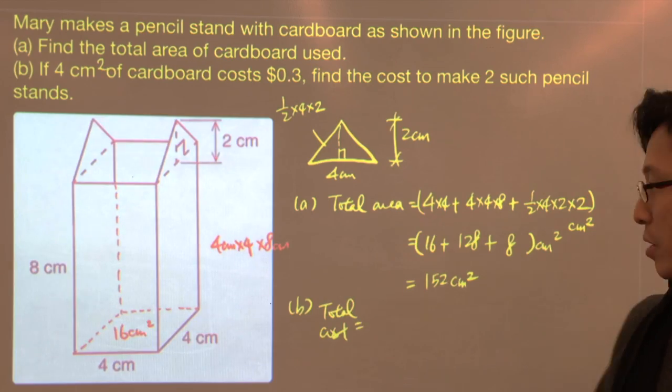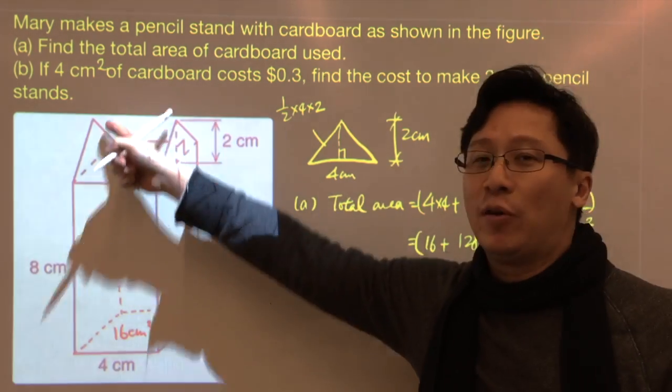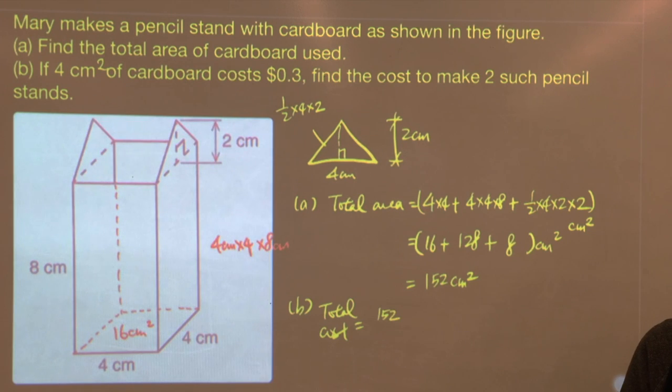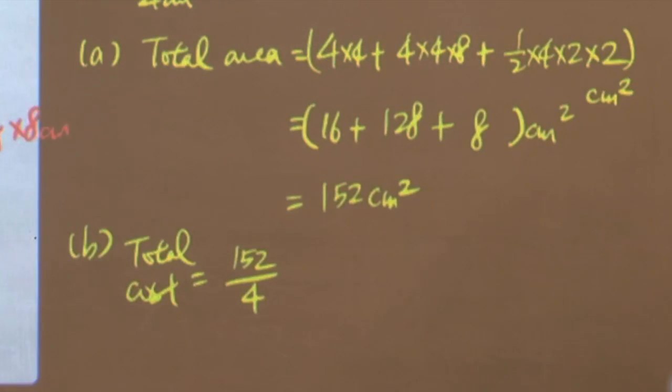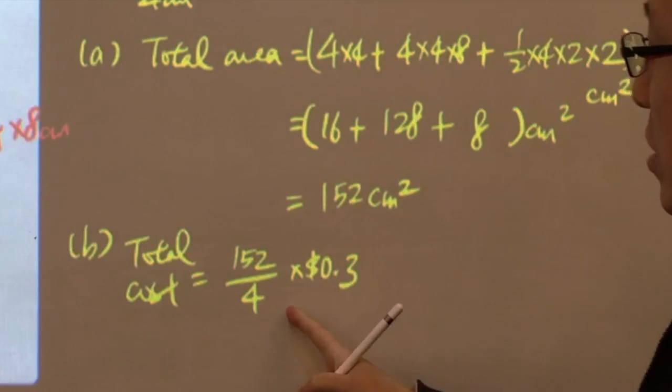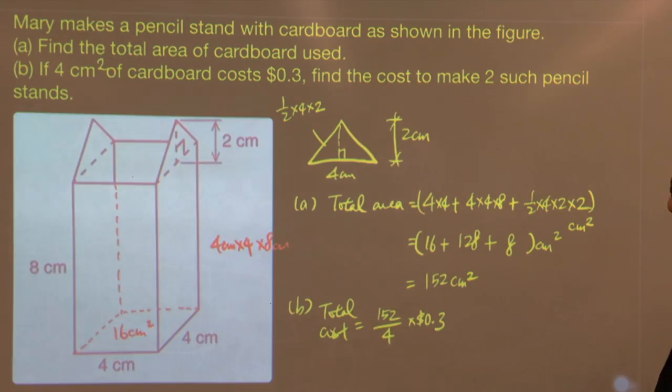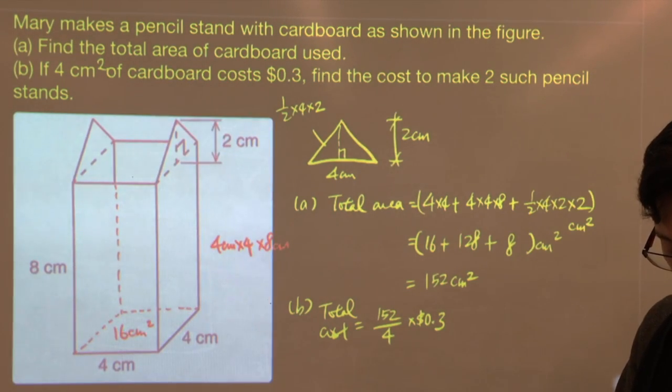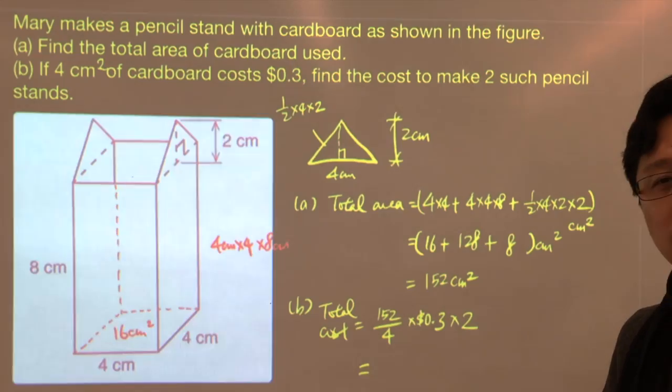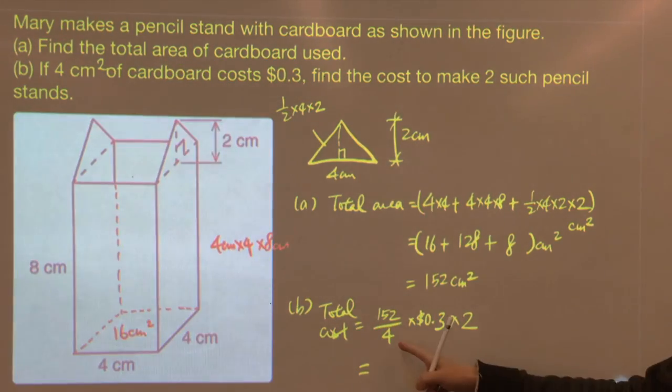So the total cost will be: we divide this by 4 cm square and then multiply this by $0.3. So this is the total cost of one pencil stand. For two, we multiply this by two.